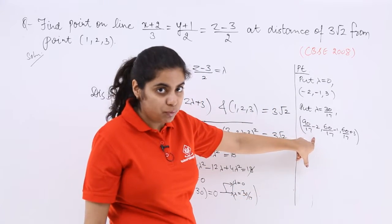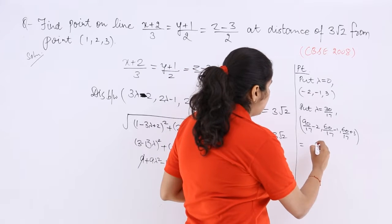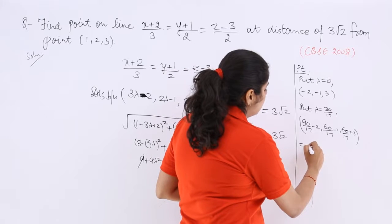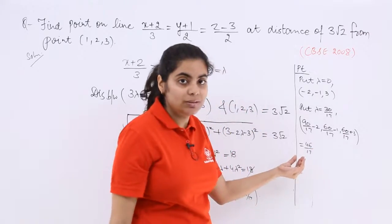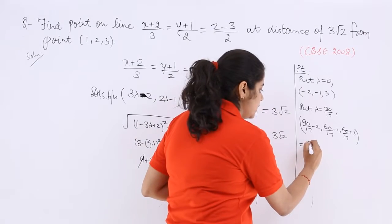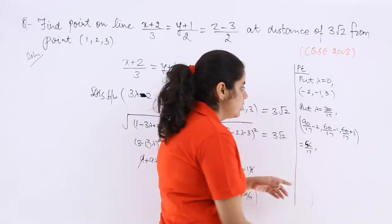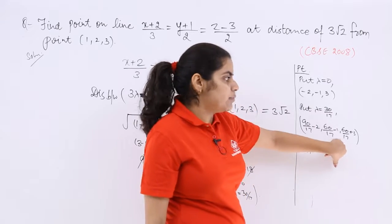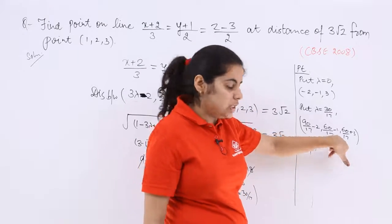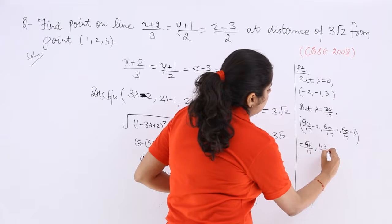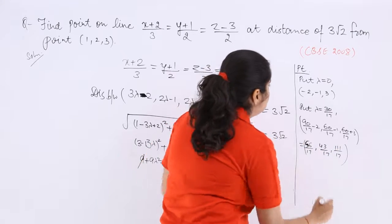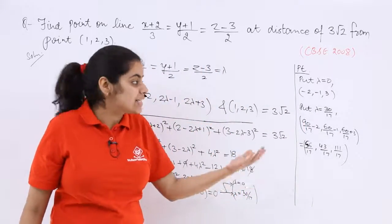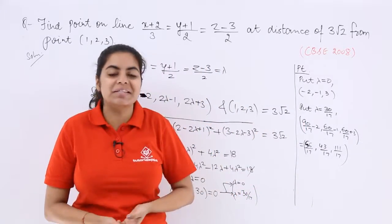Clearly you can find the LCM and solve it. So it is 90 minus 34. So what is 90 minus 34? That is 56 upon 17. Then here it is 60 minus 17 upon 17. So that should be 43 upon 17. And here it should be 111 upon 17. So these are the points. And that satisfies the conditions and finds out the answer.